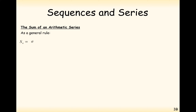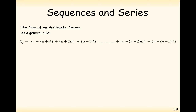Now let's see what happens with any arithmetic sequence, not just 1, 2, 3, 4. Remember, arithmetic sequences start at a and go up by d each time. In an arithmetic series we add all those terms together, in a very similar way to how Gauss did it with 1 to 100.